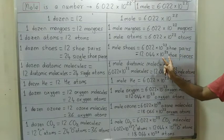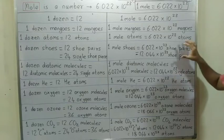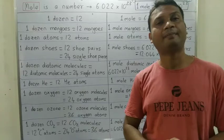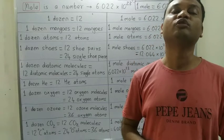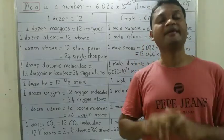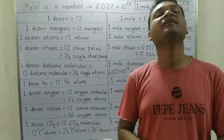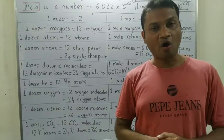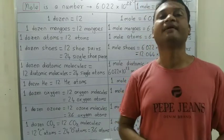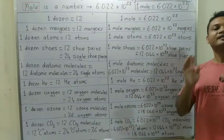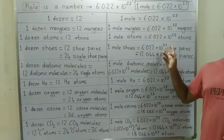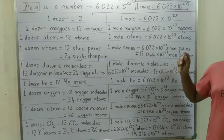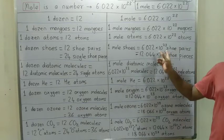Similarly, one dozen earrings — how many earrings will we get? 12 pairs of earrings, or otherwise 24 single earrings. So one mole earrings will be 6.022 into 10 raise to 23 earring pairs, or 12.044 into 10 raise to 23 single earrings — double ho jaega.